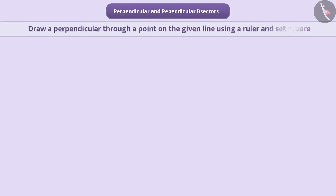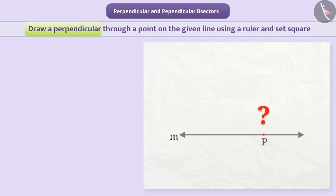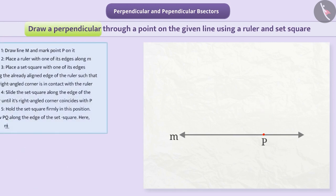Can we draw a perpendicular through a point on the given line using a ruler and a set square? Think for a while. Let me explain. The method is as follows.